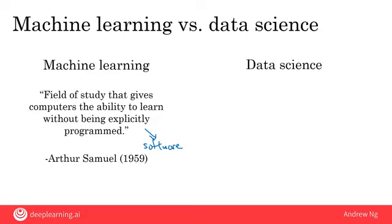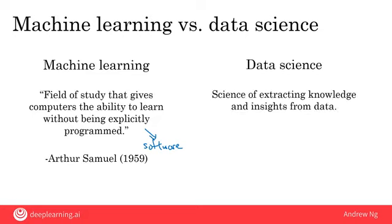In contrast, data science is the science of extracting knowledge and insights from data. The output of a data science project is often a slide deck — a PowerPoint presentation that summarizes conclusions for executives to take business actions, or for a product team to decide how to improve a website.